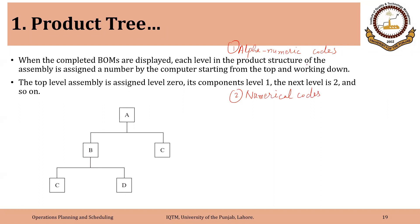For example, alphanumeric code could be something like say you are having the pump as a final product. So it could be, for example, P101. So P stands for pump, or motor maybe something like M202. So this is alphanumeric codes.